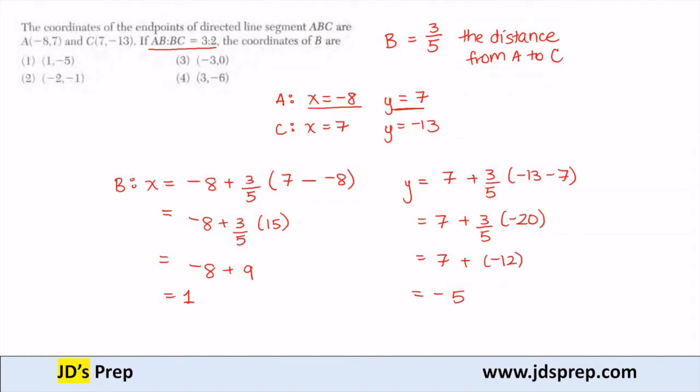So now I know that B is (1, -5), which is answer 1.